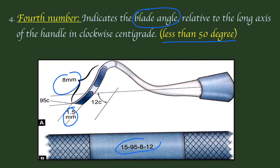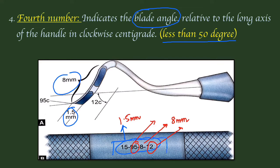Looking at the given instrument formula — it is a 4-digit formula. The first number represents the width of the blade; dividing by 10 gives 1.5 mm. The second number is the cutting edge angle, confirmed to be more than 50 degrees. The third number represents the blade length, which is 8 mm. The fourth number represents the blade angle, which is 12 — confirmed to be less than 50. Exam questions commonly ask for dimensions of the first number, since it requires dividing by 10, giving 1.5 mm width and 8 mm blade length.